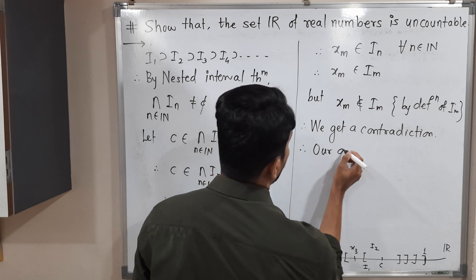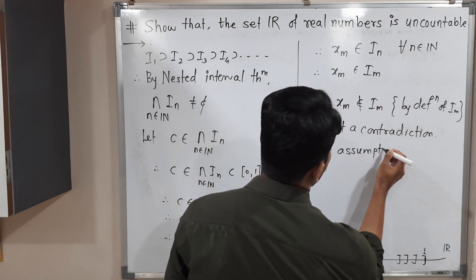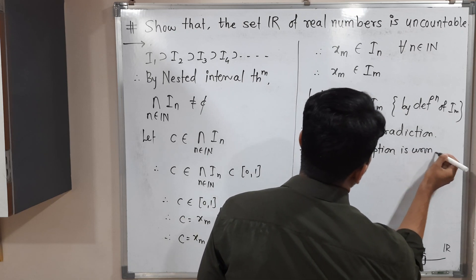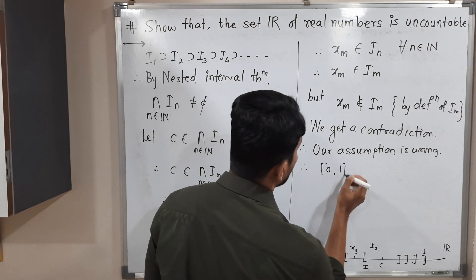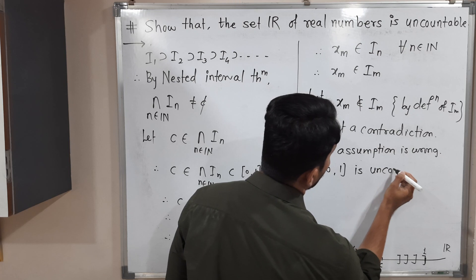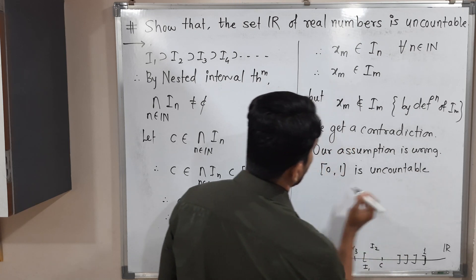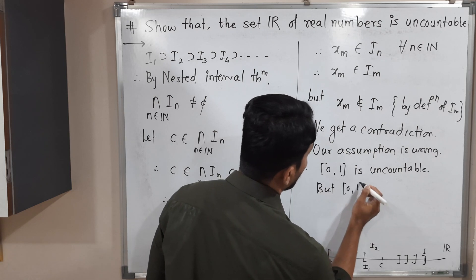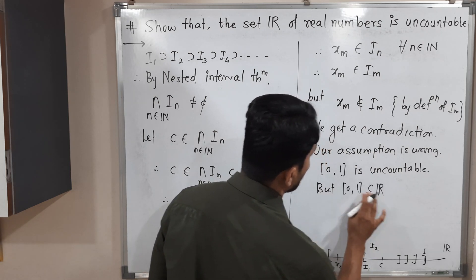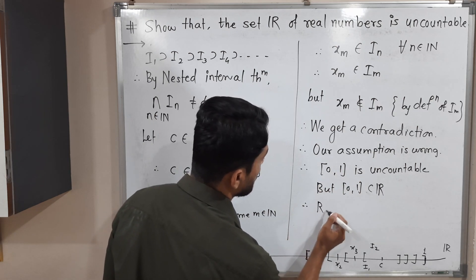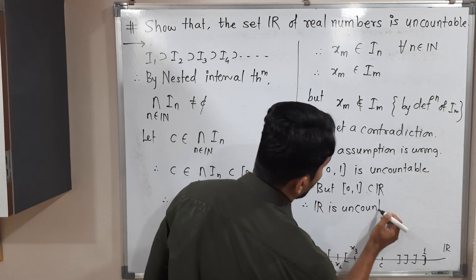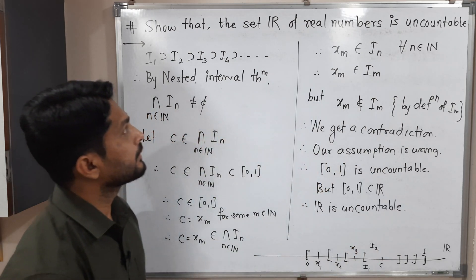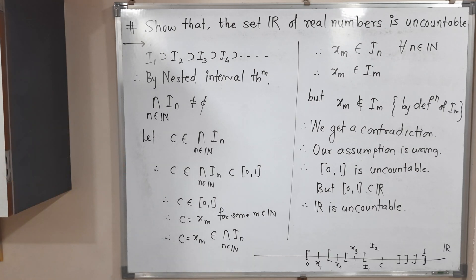Therefore our assumption is wrong. Our assumption was that the closed interval [0,1] is countable, which is wrong. Therefore [0,1] is uncountable. Since [0,1] is a proper subset of R and is uncountable, the larger set R is also uncountable. In this way we have proved that the set of real numbers R is uncountable.